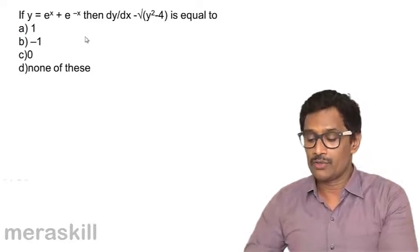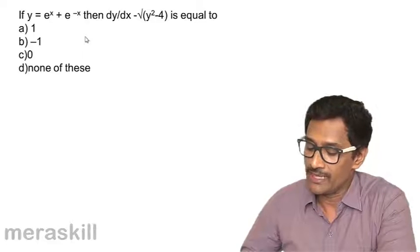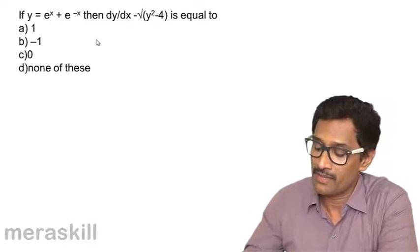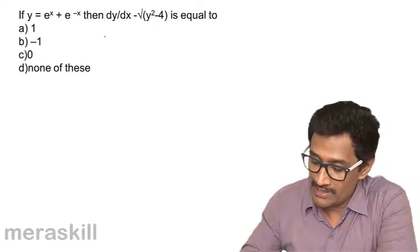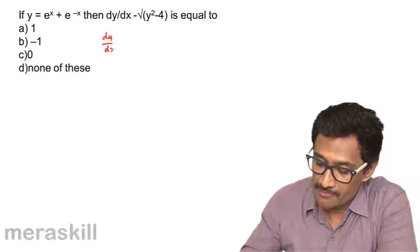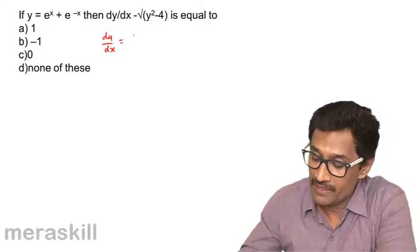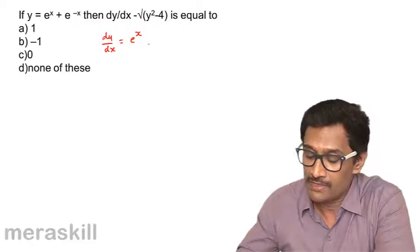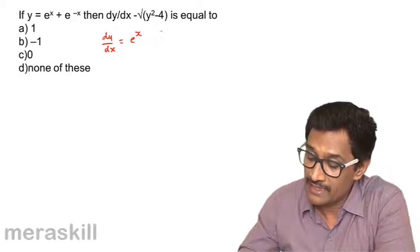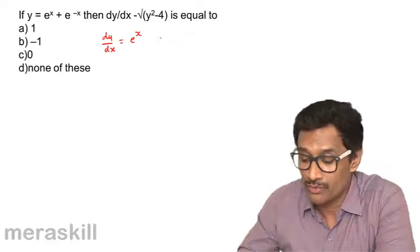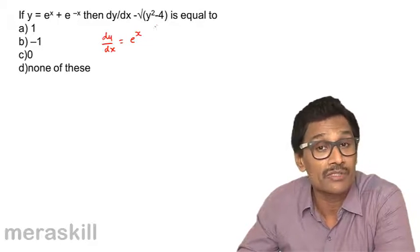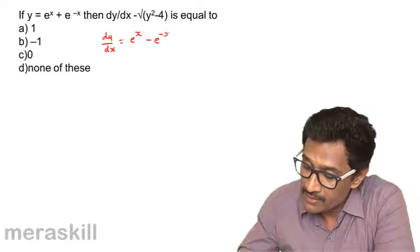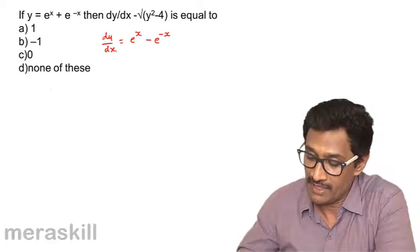Now we have y = e^x + e^(-x). We need to find dy/dx - √(y² - 4). dy/dx is the derivative of e^x plus the derivative of e^(-x). Using the chain rule, the derivative of e^(-x) is -e^(-x). So dy/dx = e^x - e^(-x).